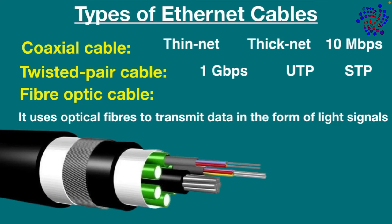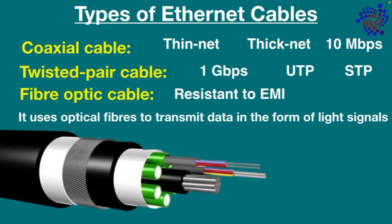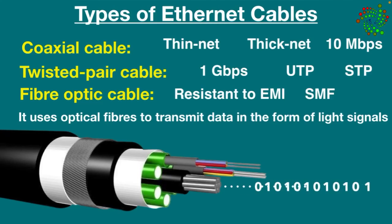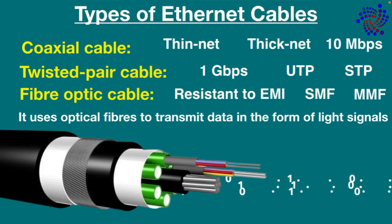Fiber optic cable uses optical fibers to transmit data in the form of light signals. This cable has strands of glass surrounded by a covering material. It can support longer distances than any other cabling and is also resistant to electromagnetic interference. However, it is much more expensive. There are two types: single-mode fiber, which uses only a single ray of light to carry data and is used for longer distances, and multi-mode fiber, which uses multiple rays of light and is less expensive than single-mode fiber.